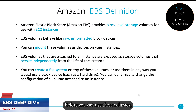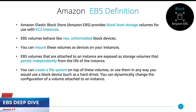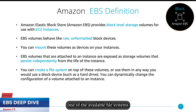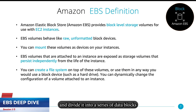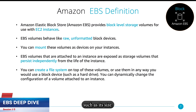Before you can use these volumes, you have to format them from within your EC2 instance itself. Based on the operating system of the instance, you can choose one of the available file systems to format the volumes with, and divide it into a series of data blocks of the same block size. With EBS, you can easily and dynamically change the configuration of the volumes, such as its size. This will be demonstrated in one of our next videos.